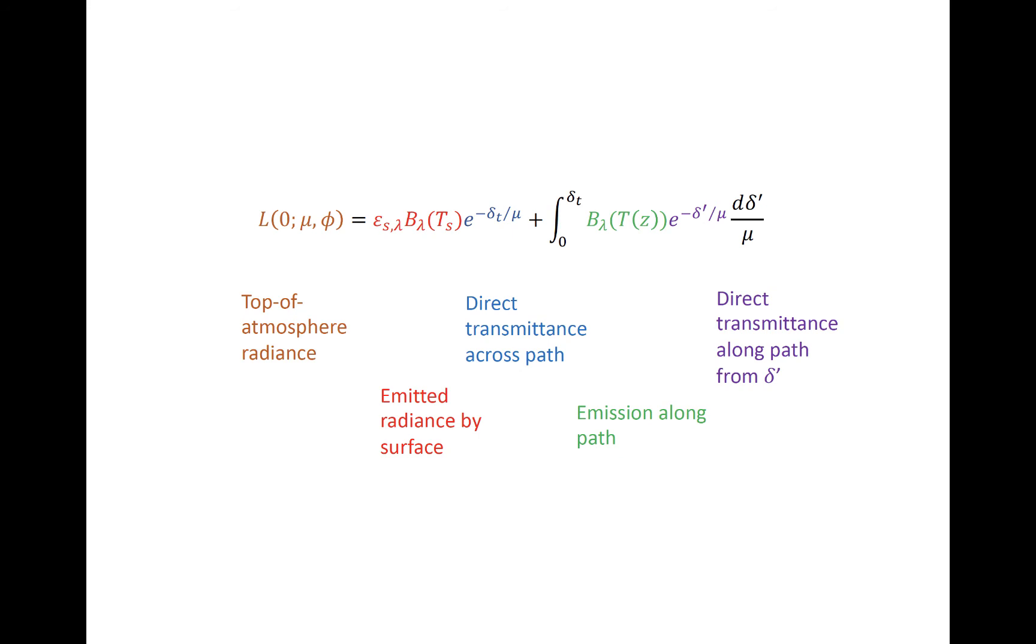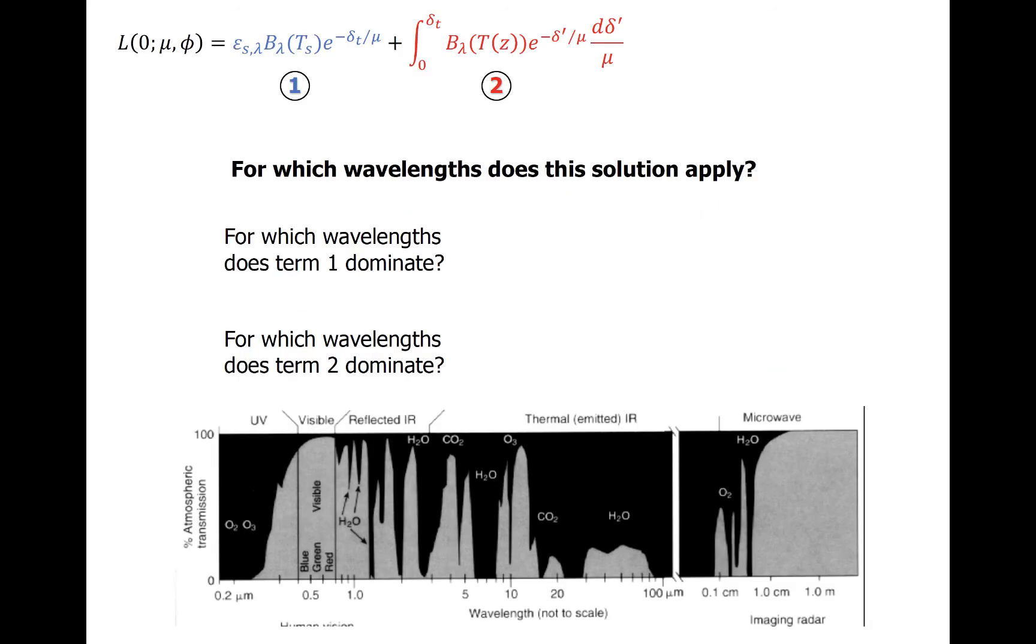So what does this mean for remote sensing? Recall our discussion of atmospheric windows. Because of water vapor, carbon dioxide, ozone, and some other molecules, the atmosphere is opaque to radiation in certain wavelengths, and transparent to it in others.